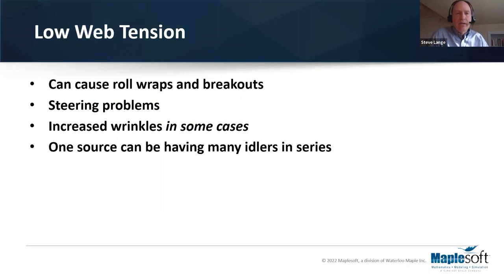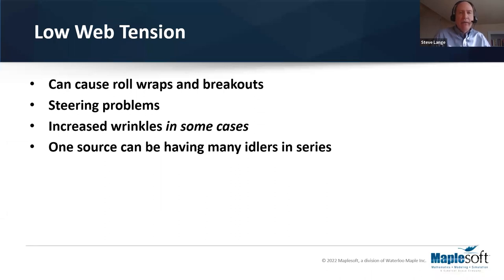One of my early bosses told me you can't push a rope when it comes to web handling. You can have a certain low tension on the low end, but too low can cause things like roll wraps and then web breakouts. You can have more steering or lateral variation with particularly low tension. Certain types of web handling wrinkles are actually made better by increasing tension because you stiffen the web, so low web tension can cause some wrinkles in some cases.